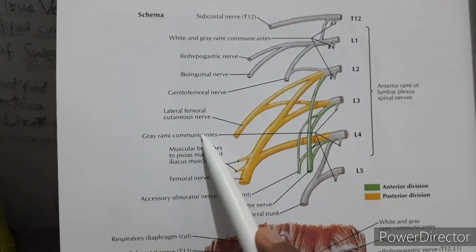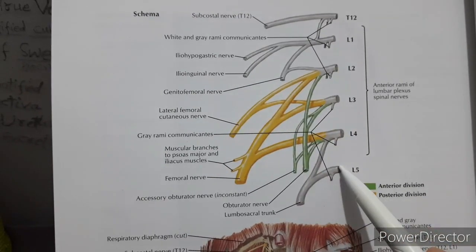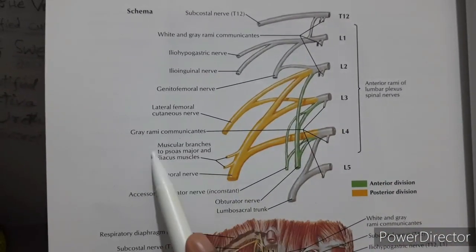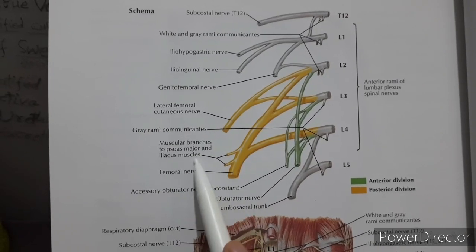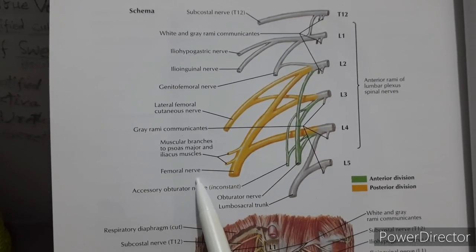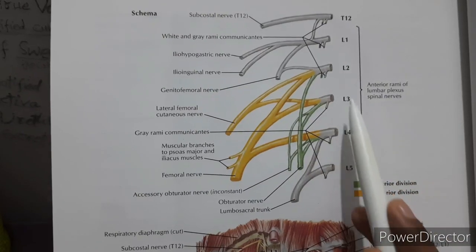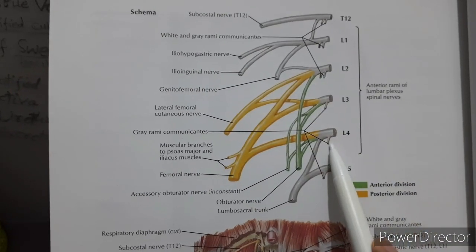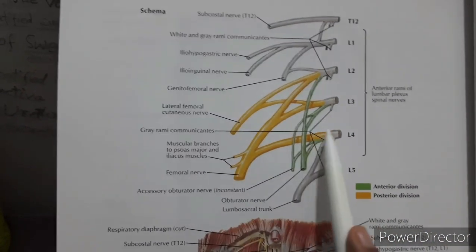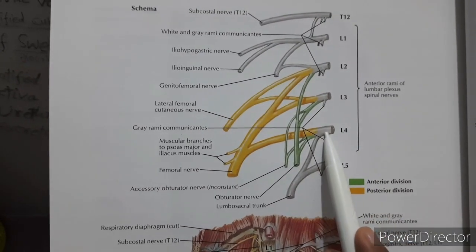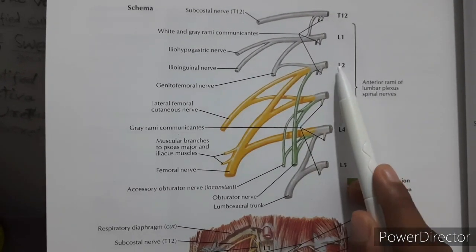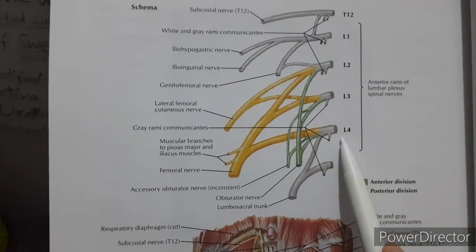Gray rami communicantes are shown for L3, L4, and L5. Muscular branches go to the psoas major and iliacus muscles. The femoral nerve arises from the dorsal division of L2, L3, and L4. The accessory obturator nerve comes from the ventral division of L3 and L4, and the obturator nerve from the ventral division of L2, L3, and L4.